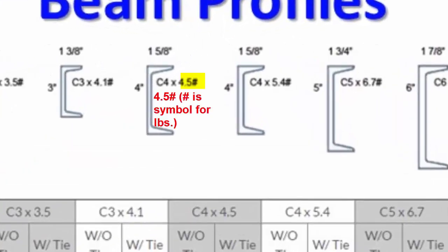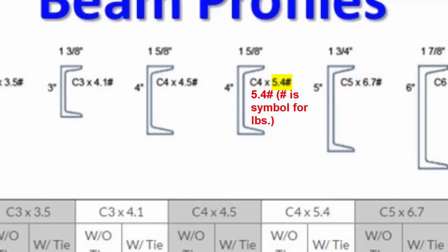For example, a 4 inch structural channel can be 4.5 pounds per foot or 5.4 pounds per foot. The heavier of course would yield the higher load capacity.